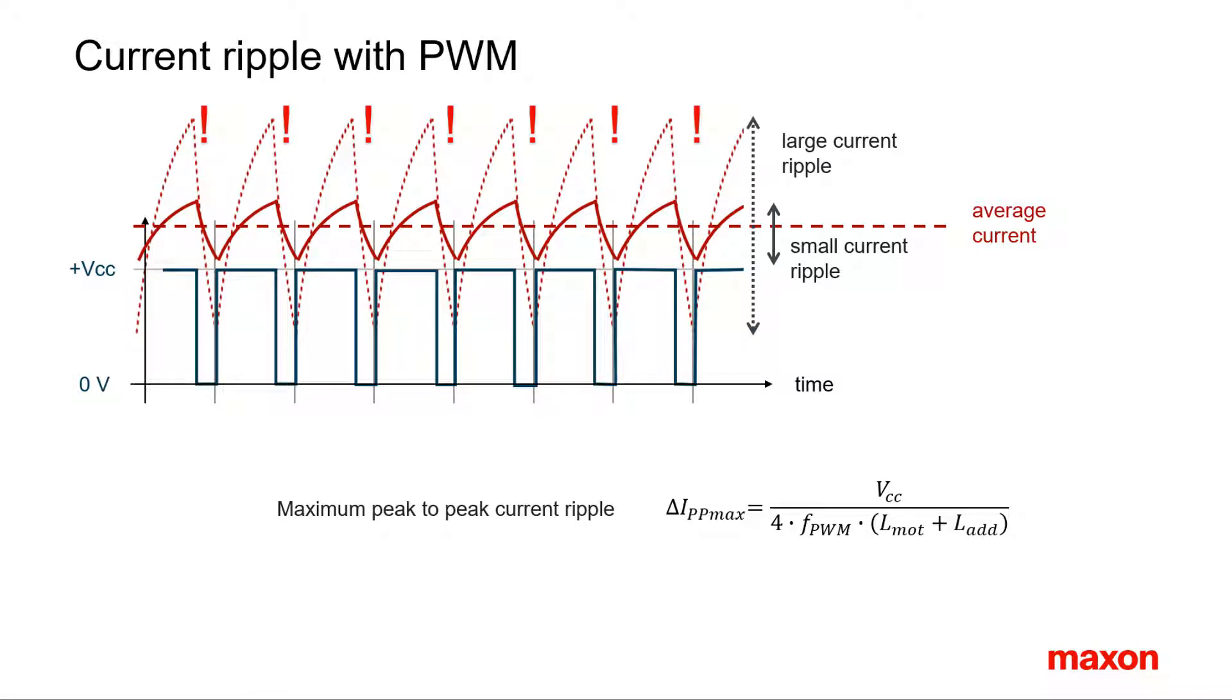The maximum torque ripple can be approximated with this formula. The formula is easy to understand, and hence the measures to be taken for reducing the amplitude of the ripple as well. Reduce the supply voltage, this reduces the maximum current increase within each PWM cycle. Allow less time for the current to react, this means increase the PWM frequency.